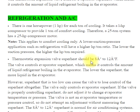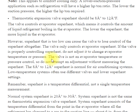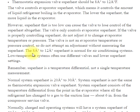Thermostatic expansion valve superheat should be 8° to 12°F. The valve controls evaporator superheat, which means it controls the amount of liquid refrigerant boiling in the evaporator. The lower the superheat, the more liquid in the evaporator. However, superheat that is too low can cause the valve to lose control of the superheat altogether. The valve only controls evaporator superheat — do not adjust it to change evaporator temperature or pressure without first measuring the superheat.